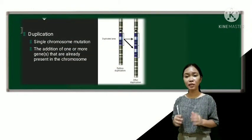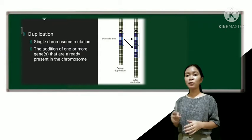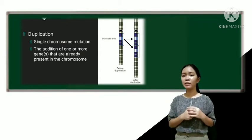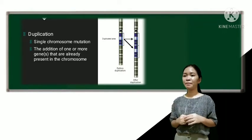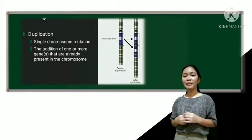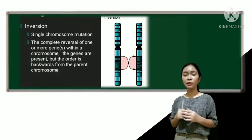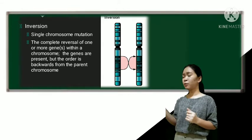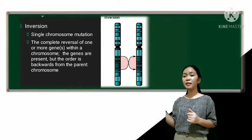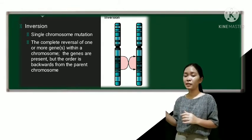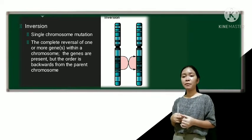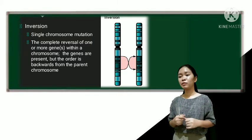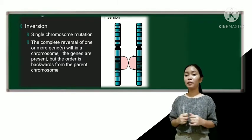So next is the duplication. So duplication is the addition of one or more genes that are already present in the chromosome. So this is also a single chromosome mutation. Okay, next is the inversion. So inversion is a mutation that involves the complete reversal of one or more genes. So focus on the picture. Can you see? So within a chromosome, the genes there are present, but the order is backwards from the parent chromosome. So this is also a single chromosome mutation.